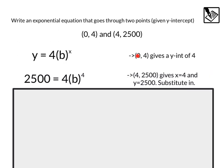But we also have this second point. And if we take that point (4, 2500), we can take the x value of 4, substitute that in for x, and the y value of 2500, substitute that for y. And that gives us an equation that we can solve with one missing parameter, or in this case, we could say it's our variable b.